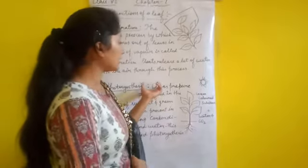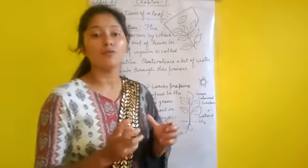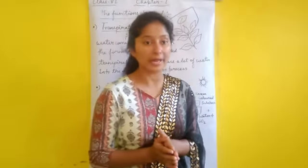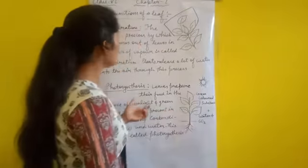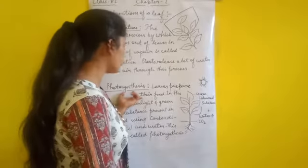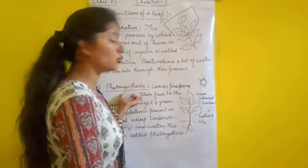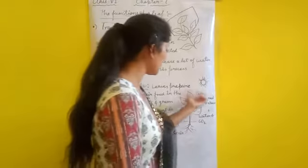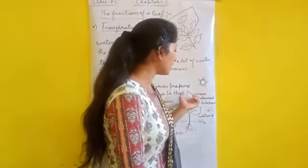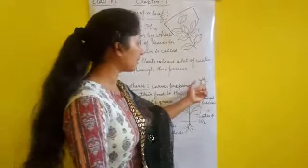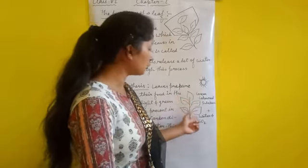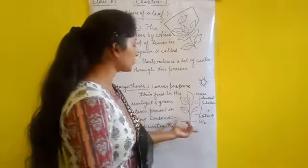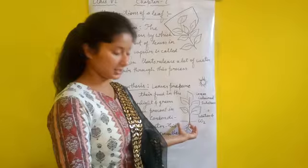Jis se leaves apna food make karti hai, food prepare karti hai in plants. This is another function of a leaf — the food making process — and this process is known as photosynthesis. Plants have a green colored substance and in the presence of sunlight, by using carbon dioxide and water, they make food. This process is called photosynthesis.